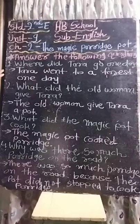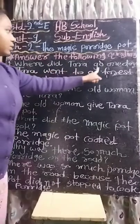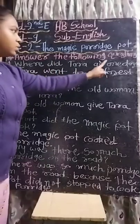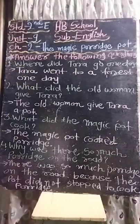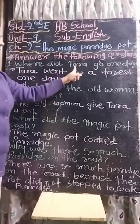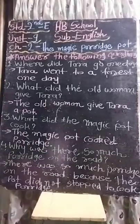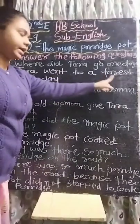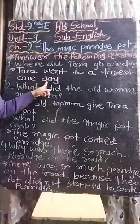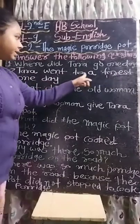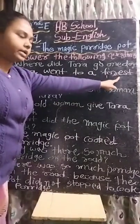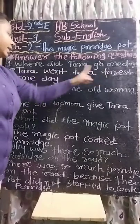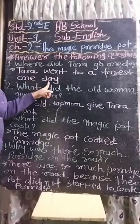First one: Where did Tara go one day? (Yani ki Tara ek din kaha par gai?) Answer: Tara went to a forest one day.